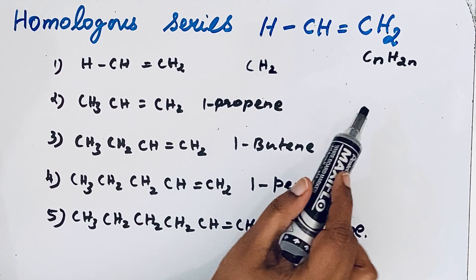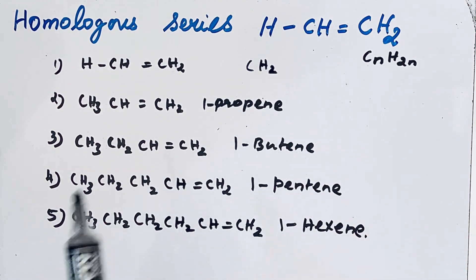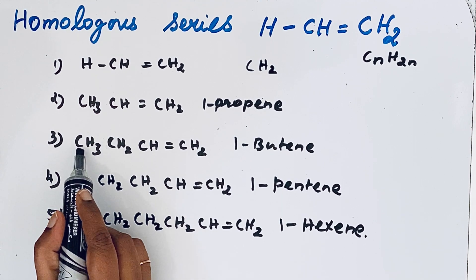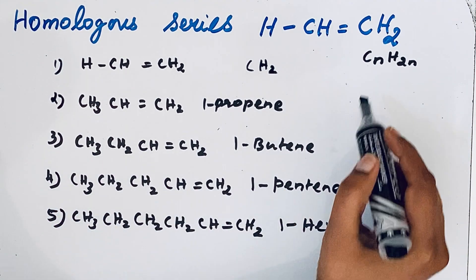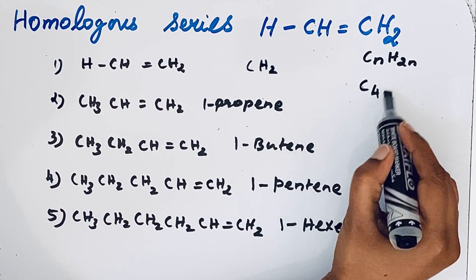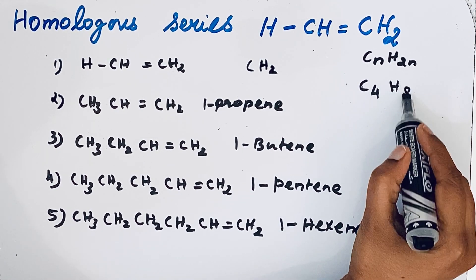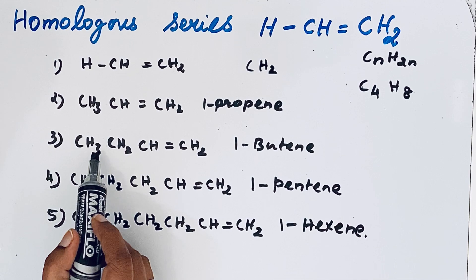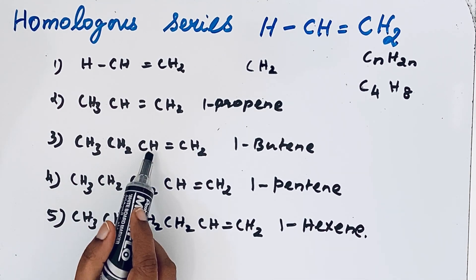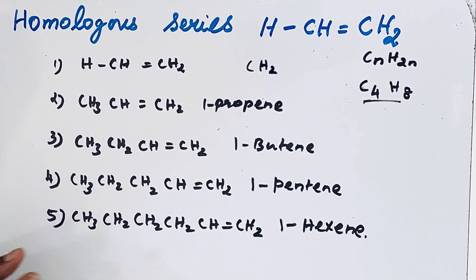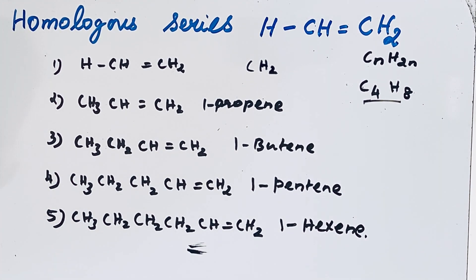You can see that everywhere the general formula CnH2n is satisfied. For example, take the third one. Carbon atoms: one, two, three, four. So four carbon atoms. Then H2n means that eight hydrogen atoms should be there. Let us check: three plus two is five, six, six plus two is eight. So this follows the general formula of CnH2n. These are the homologous series of the given example.